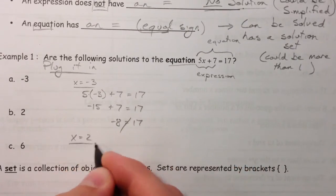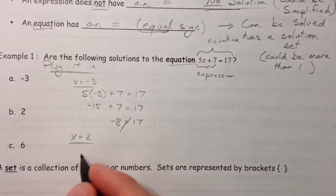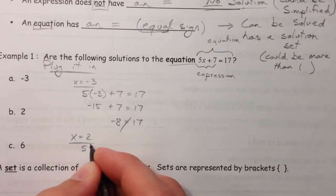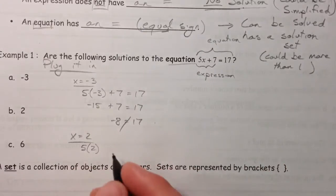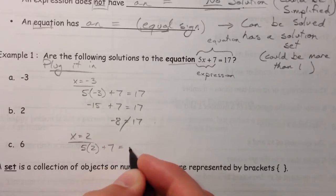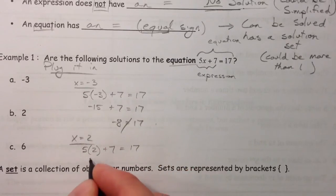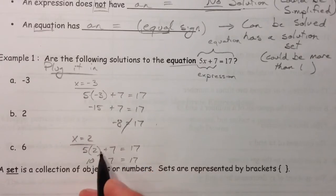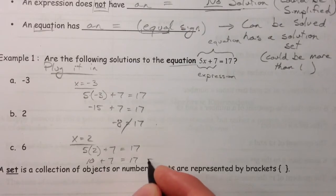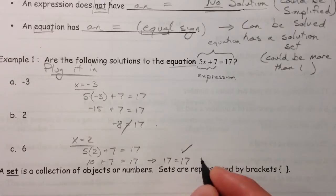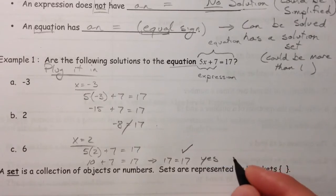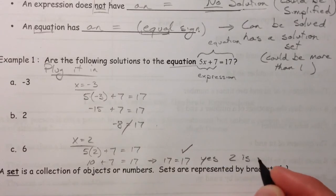What about x equals 2? 5 times x, which is 5 times 2, plus 7 equals 17. Well, that's 10 plus 7 equals 17. Remember, we're doing order of operations, so we have to do the multiplication first. So that means 17 equals 17. That means yes, 2 is a solution.